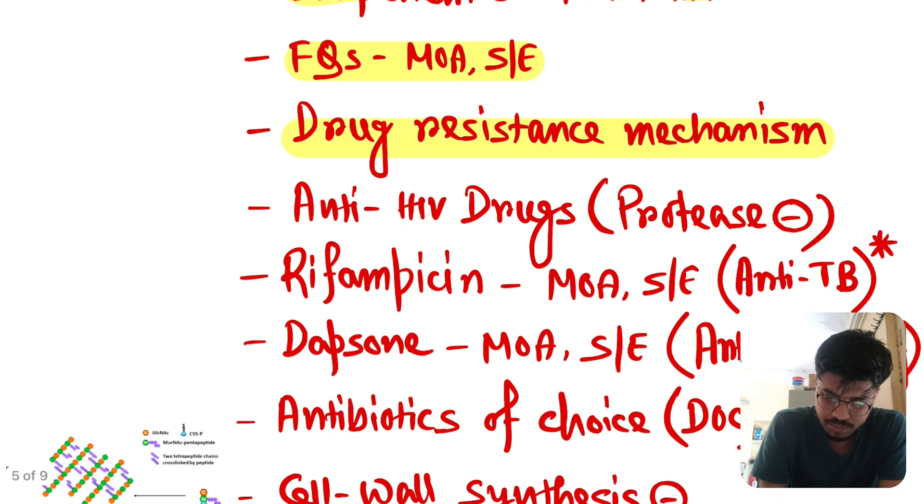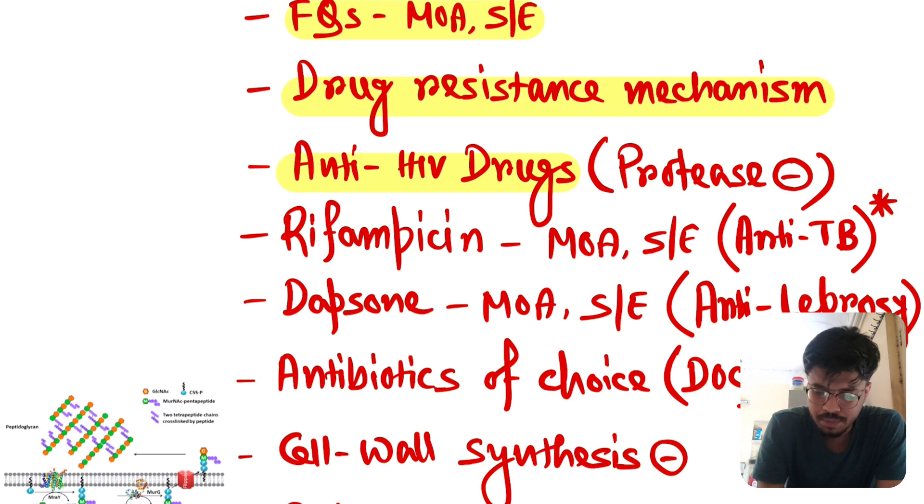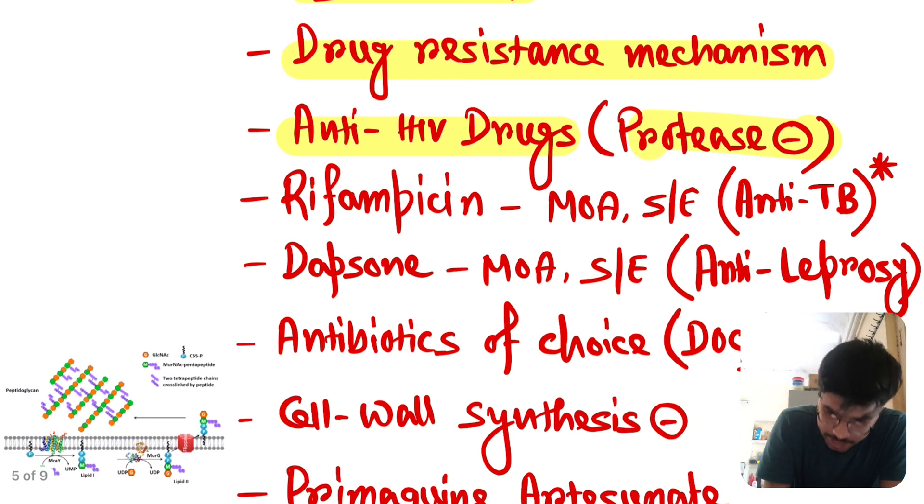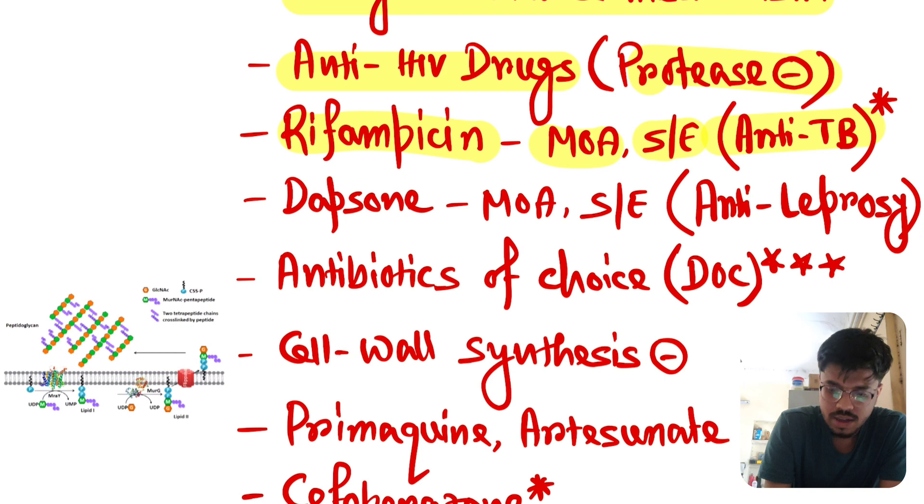Fluconazole, mechanism of action and side effects. Drug resistance mechanism. Anti-HIV drugs, specially protease inhibitor. Anti-TB drug, specially rifampicin, mechanism of action and side effects. Anti-leprosy drugs, specially dapsone, mechanism of action and side effects. And mind it, among the anti-TB drug, you have to read rifampicin. You have to read ethambutol. You have to read isoniazid, pyrazinamide. All are important. Mechanism of action and side effects. Very very important.